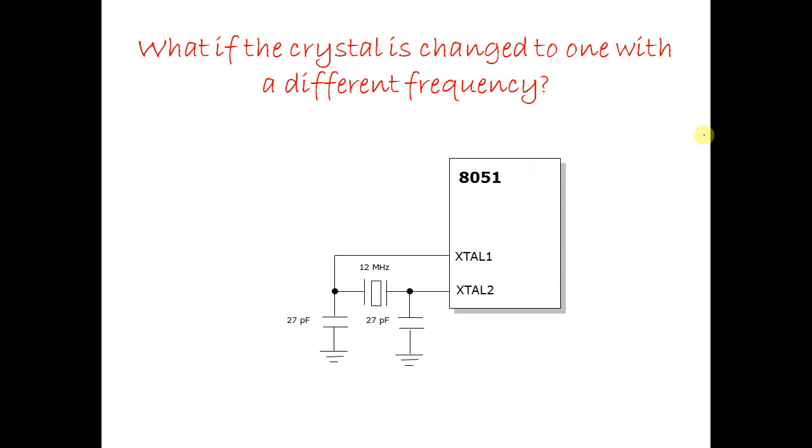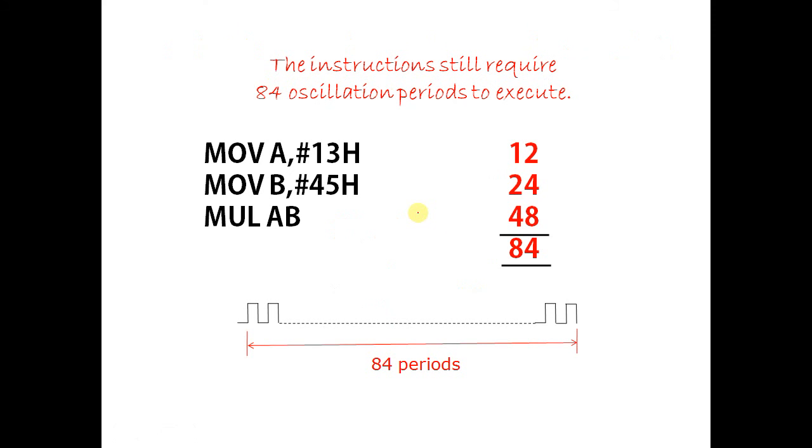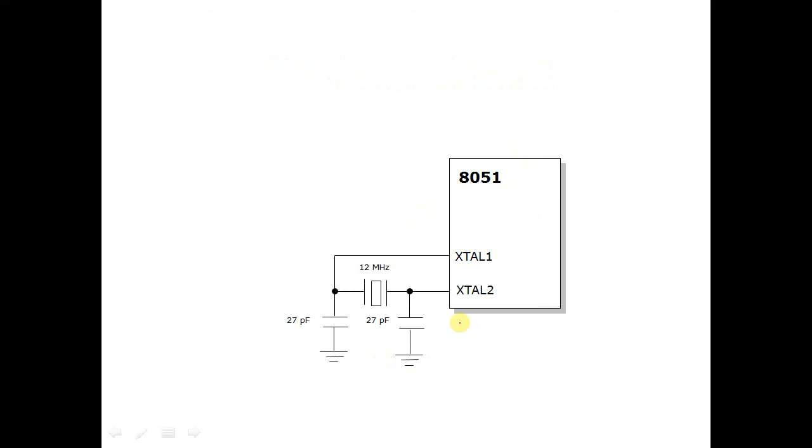What if a crystal is changed to one with a different frequency? The instructions still require 84 periods to execute. Does the total time change? Let's work it out. Frequency is now 24 megahertz. 84 periods will now take 3.5 microseconds.